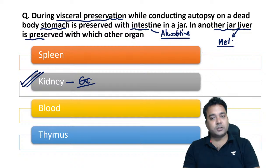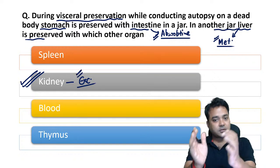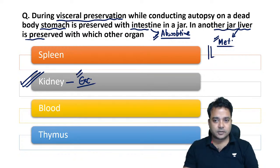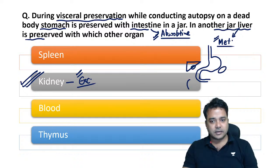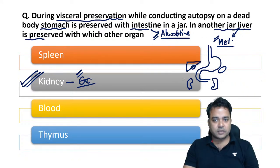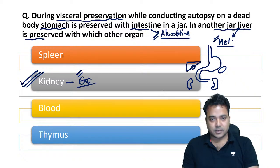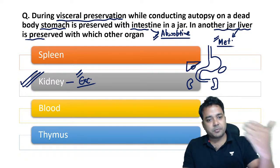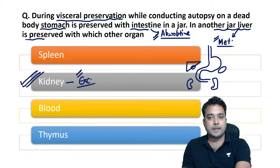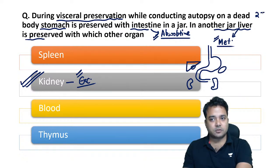During autopsy we are not aware whether the poison is maximally in absorptive, metabolic, or excretory phase, so we preserve all organs: stomach, 30 cm of proximal small intestine, 500 grams of liver with gallbladder, spleen (optional depending on case), and half of both kidneys. This ensures poison detection can be done regardless of phase. We basically use two jars during visceral preservation.